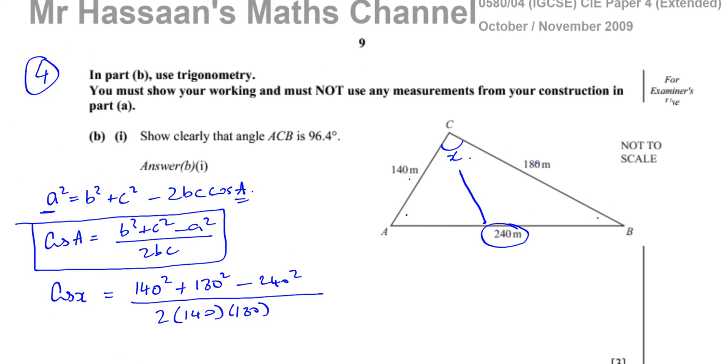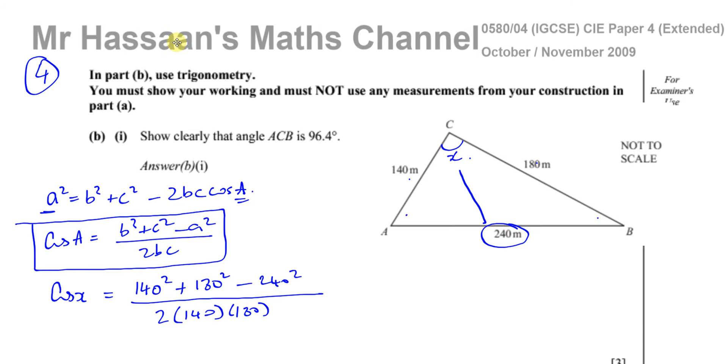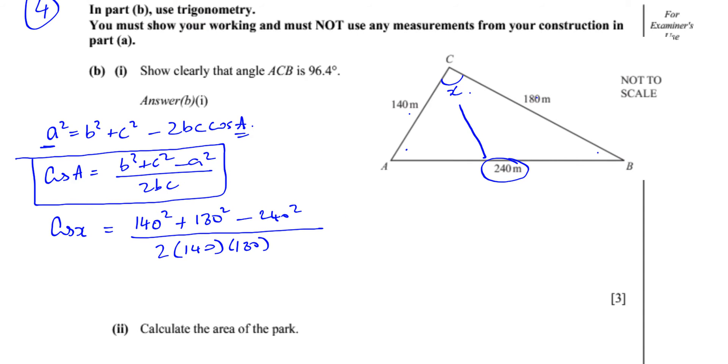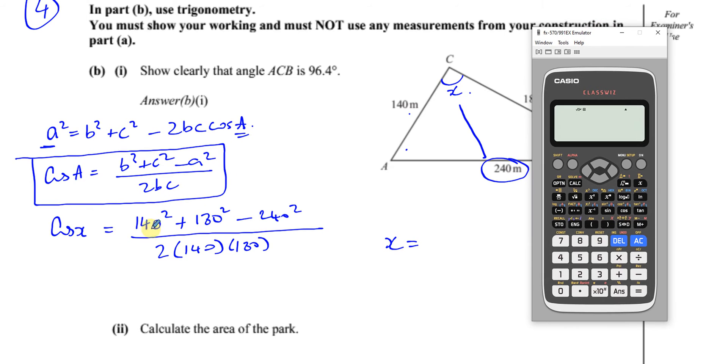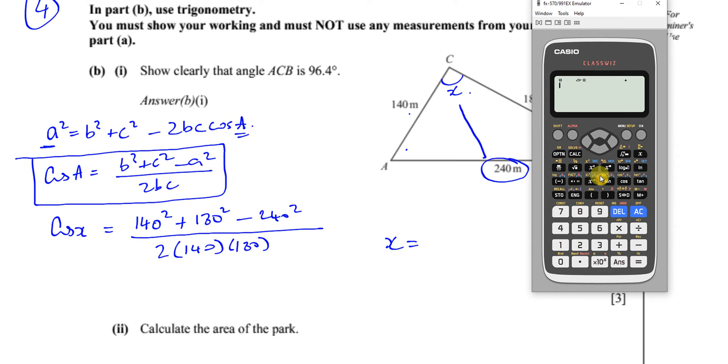So we can find now the value of the angle X by using inverse cosine of all of this. So if you've shown this step here, that's your method marks done. You don't really have to worry too much about anything else in terms of showing the values of these and stuff. You can straight away just take your calculator and press inverse cosine. Make sure it's in degree mode, which it is.